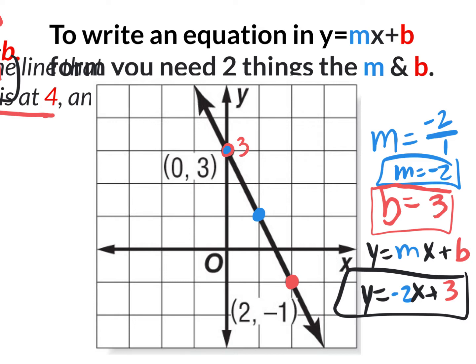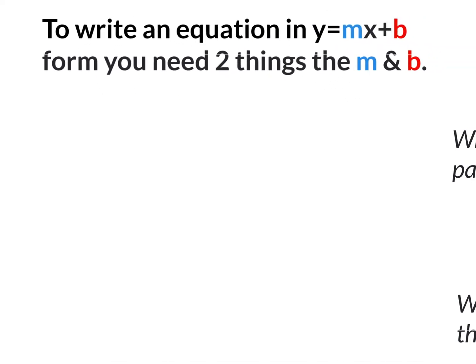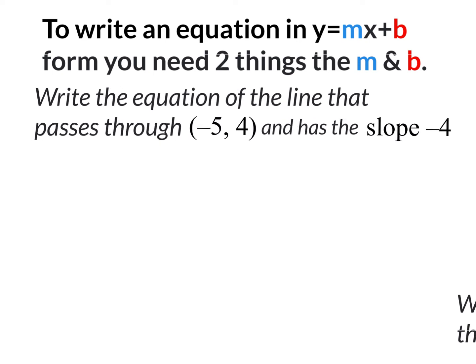This is another example of the easiest type of questions on this section, because they give you the m and they give you the b — you just look at the graph, understand what m and b are, and write it in slope-intercept form. In order to write an equation in slope-intercept form, you need two things: the m and the b. You can find both just by looking at the graph. Now let's move on to a more fun type of question. In math, you always take the information they give you to find out the information that you don't know.